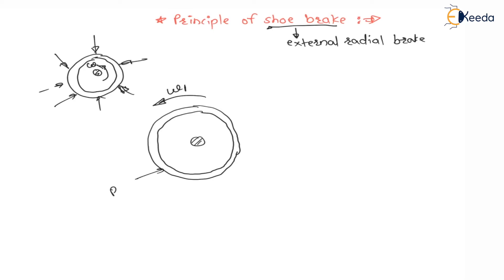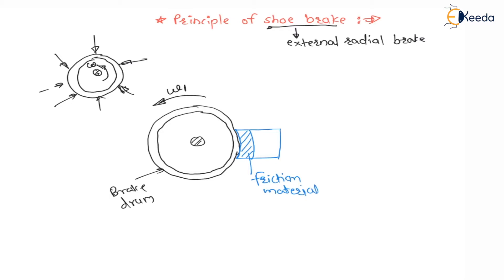On this brake drum, our target is to apply external force for braking purpose. There is a friction material in contact with this brake drum. This friction material is connected in front of a steel shoe. We are applying force F on this steel shoe — F is the applied force on the steel shoe.